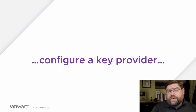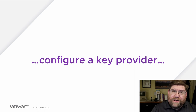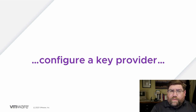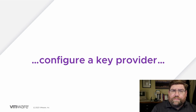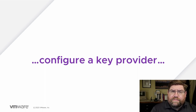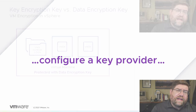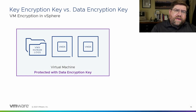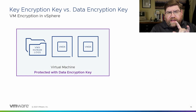The secret sauce here is really that 'configure a key provider' part. What do key providers do? Well, they provide keys — it's kind of like the car dealership. When I bought my truck, they provided me keys so I could start my vehicle. A key provider does exactly that — it provides the keys so that you can unlock a VM. There are two keys involved, and the key provider gets involved with one of them, while vSphere generates the other one on its own.